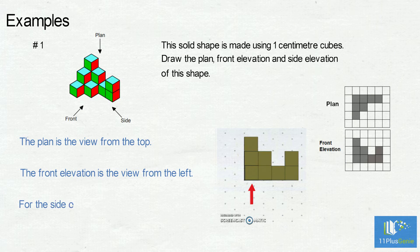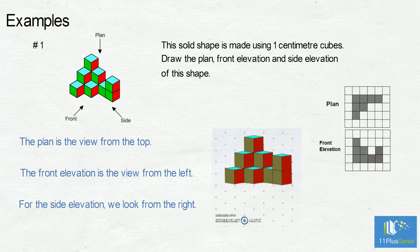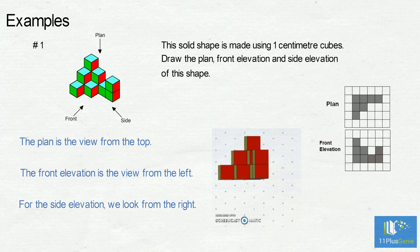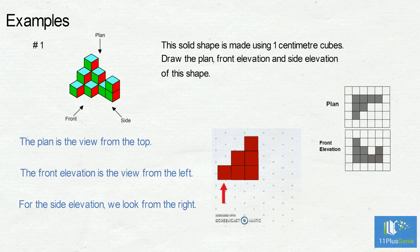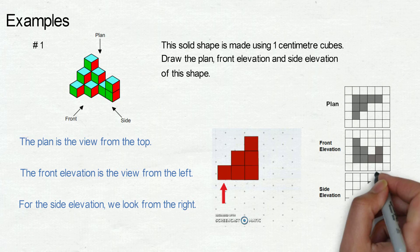For the side elevation, we look from the right — we will only see the red faces. From left to right there are one, then two, and then three blocks on top of each other. The side elevation looks like this.